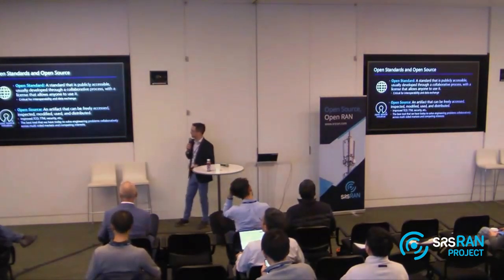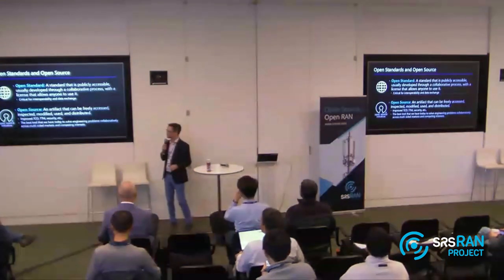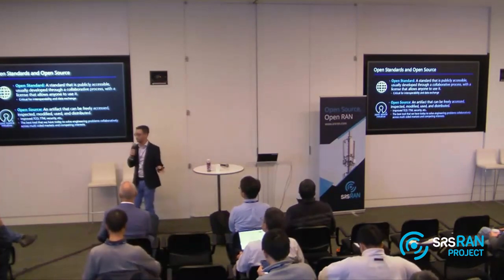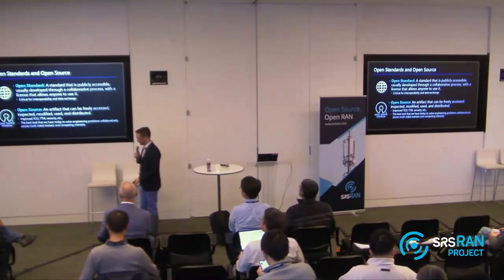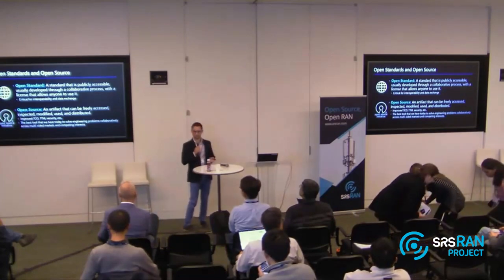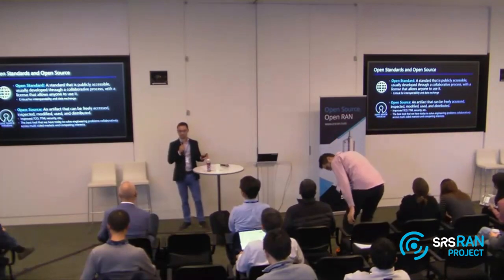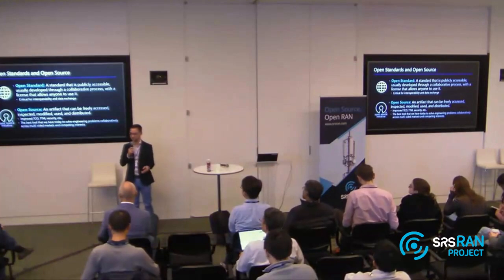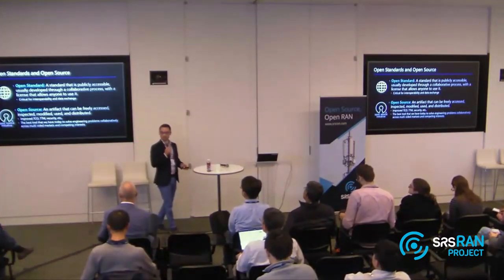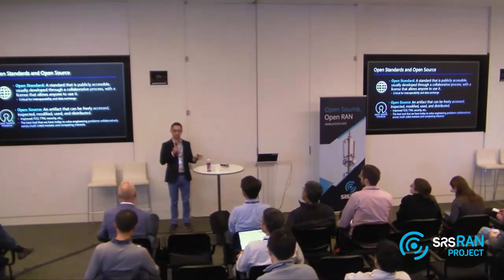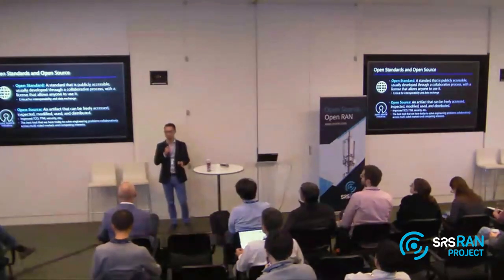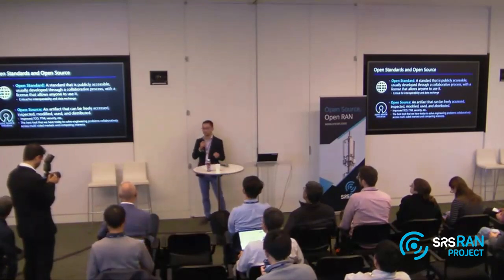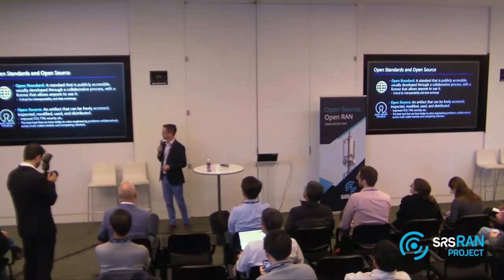Just to start out, I want to disambiguate two things. An open standard is something that's publicly accessible, usually developed in some collaborative process, and it has a license that allows anyone to use it — full stop. Look at IEEE standards, USB, the Gerber file standard for PCB design. You can use those standards. Sometimes you have to pay for access to them. You cannot modify them. Whoever owns the copyright gives you no right beyond using it — you can't modify it, derive from it, create a new version, or redistribute it, especially for profit. Open source is entirely different.